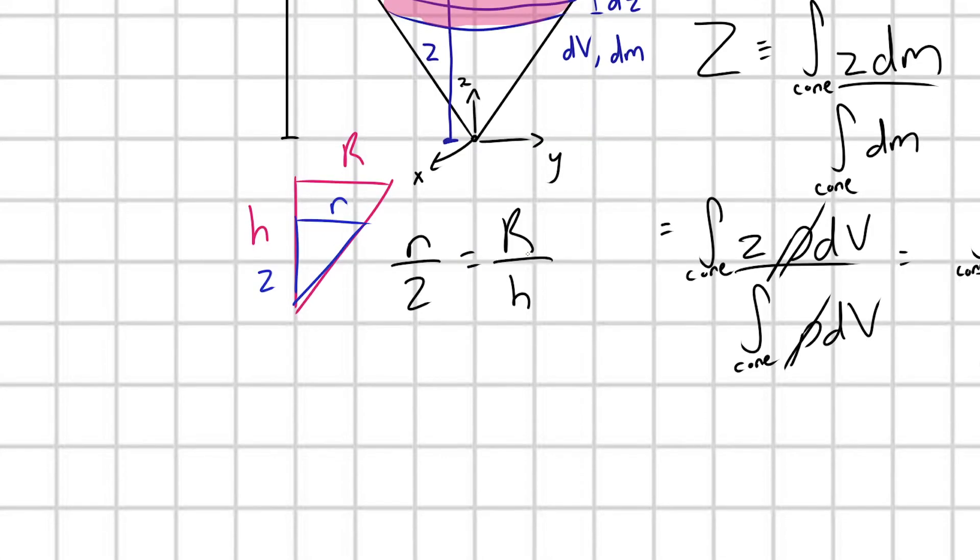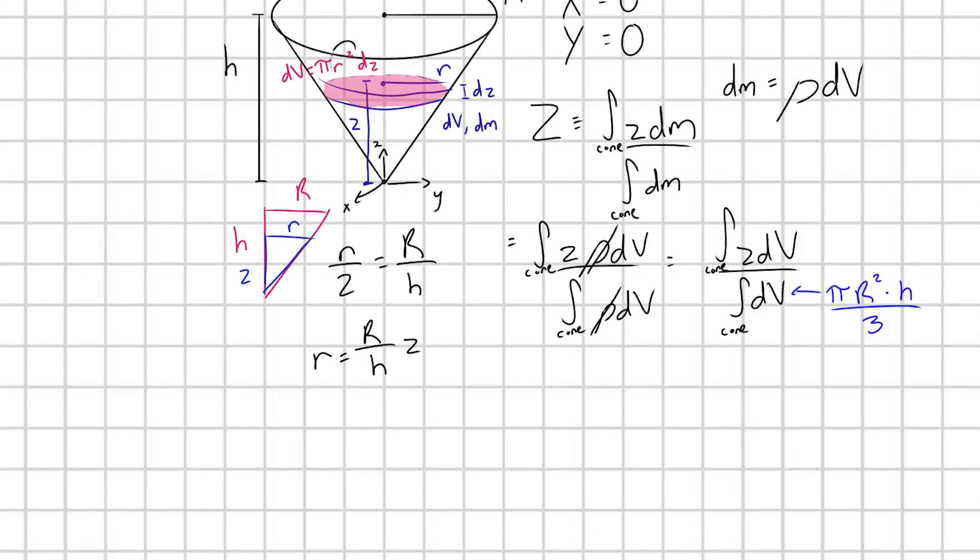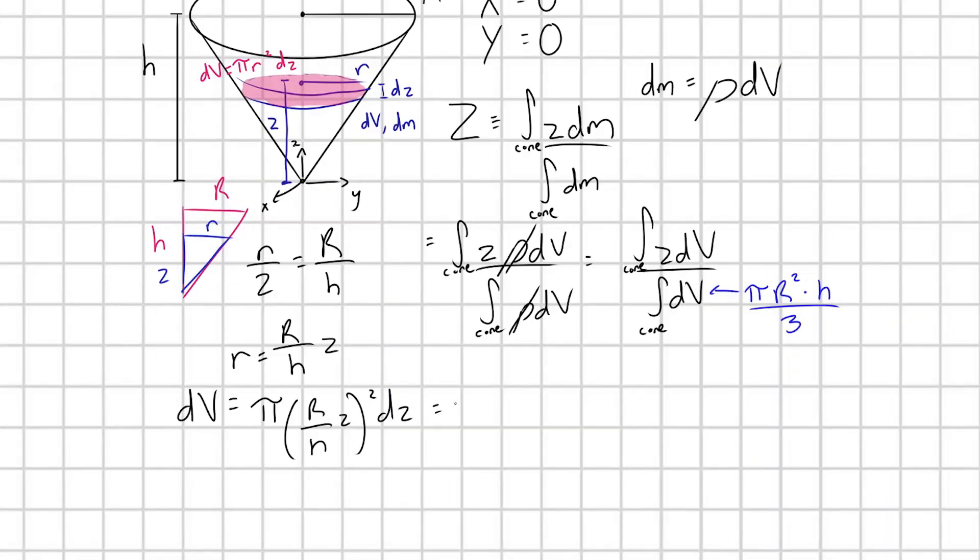the ratio of r over z here is going to be equal to the ratio of capital R over h. And so we can immediately write out from this that r is going to be equal to capital R over h times z. Or in other words, pi R squared over h squared z squared dz.